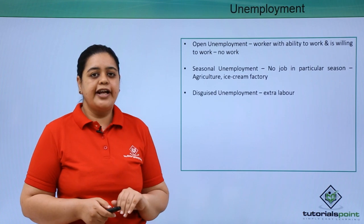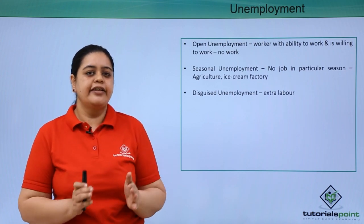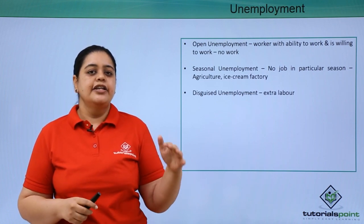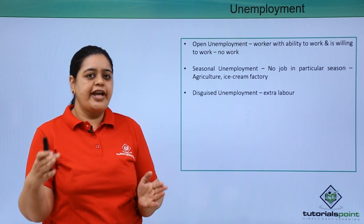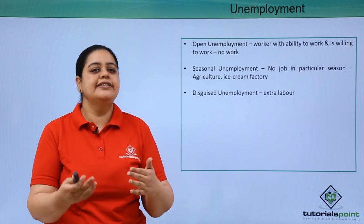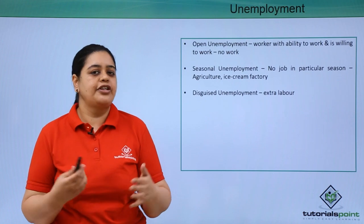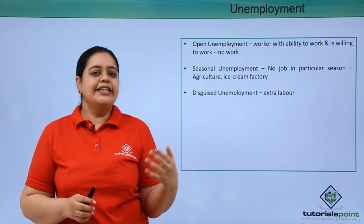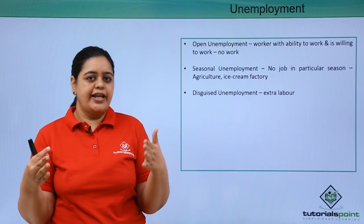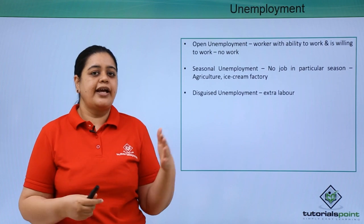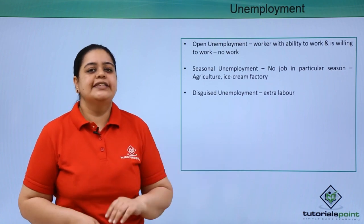This is another kind of unemployment known as disguised unemployment. How do we identify it? If you require 10 people on your piece of land for a certain farming process, and you remove 5 of those 10 and still get the same productivity, that means there was disguised unemployment — 5 extra people were working who were not required. Similarly in industry, if 10 people are needed to produce a toy but removing 3 still yields the same output, those 3 were extra — that is disguised unemployment.